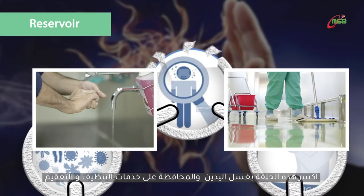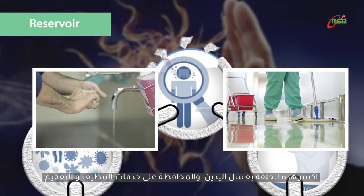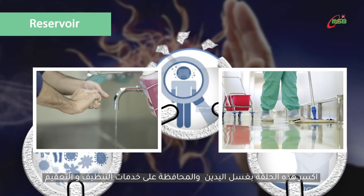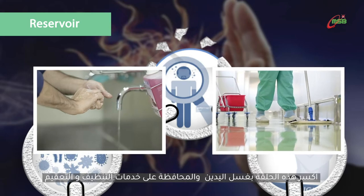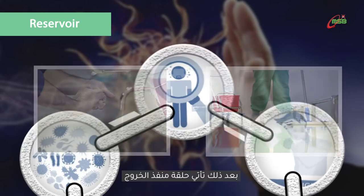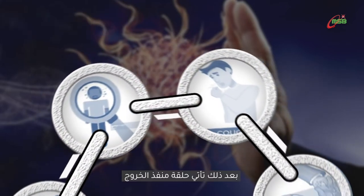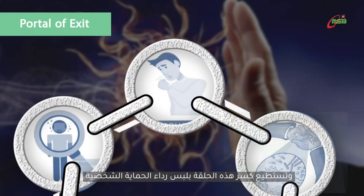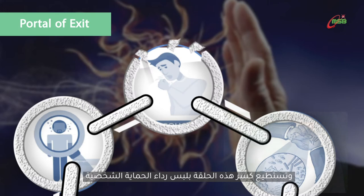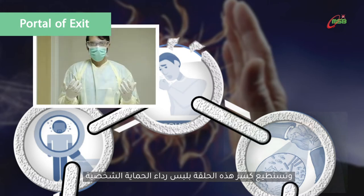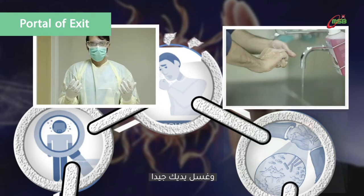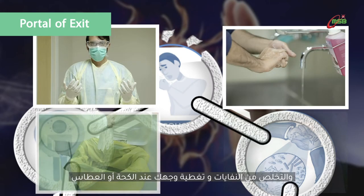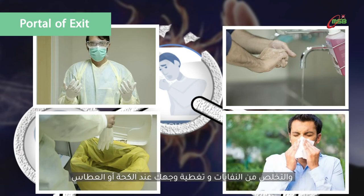Break the reservoir link by washing hands, keeping clean environments, and disinfecting surfaces. Next in the chain of infection is the portal of exit. You can break this link by wearing personal protective equipment, washing your hands properly, disposing of trash, and covering your cough or sneeze.